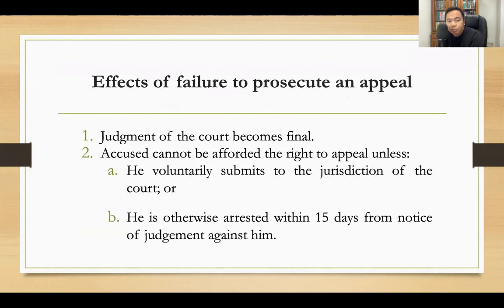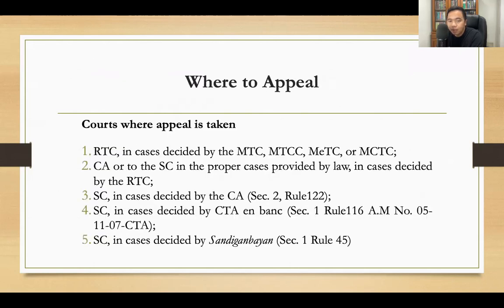What are the effects of failure to prosecute an appeal? If the accused filed an appeal but failed to prosecute it — failing to file the proper pleadings on appeal — then the judgment of the court convicting him becomes final. The accused cannot be afforded the right to appeal unless he voluntarily submits to the jurisdiction of the court or is arrested within 15 days from notice of judgment against him.